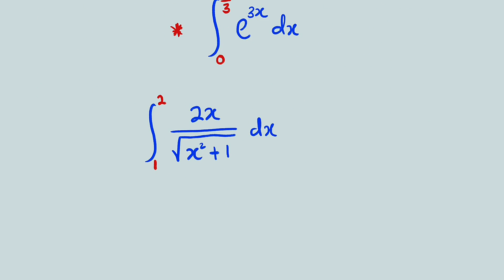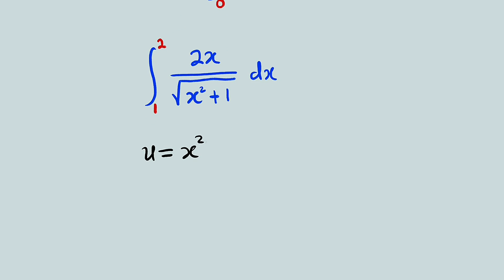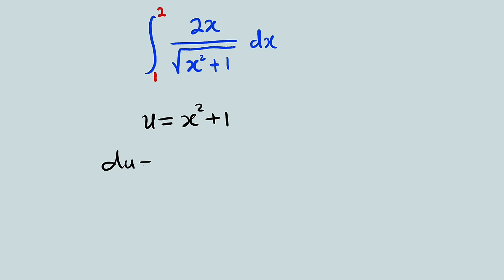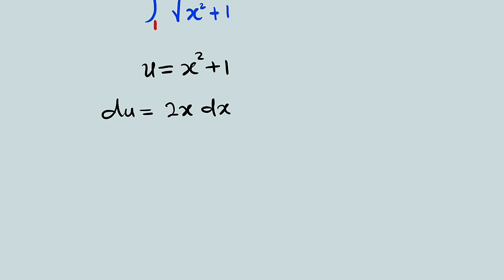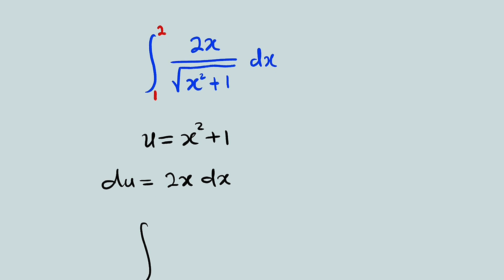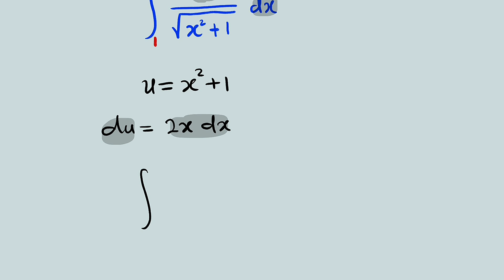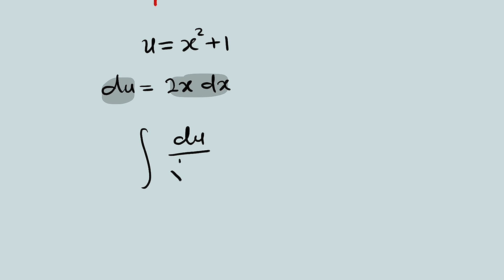Here's our first problem. I would like to let x squared plus 1 be equal to u. So let u be equal to x squared plus 1. Then we can differentiate this function: we have du equal to 2x dx. Therefore our integral now becomes — forget about the limit because we are going to change them. We have 2x dx on top, which we can replace with du, divided by the square root of x squared plus 1, which we have let equal to u. So we just have the square root of u here.